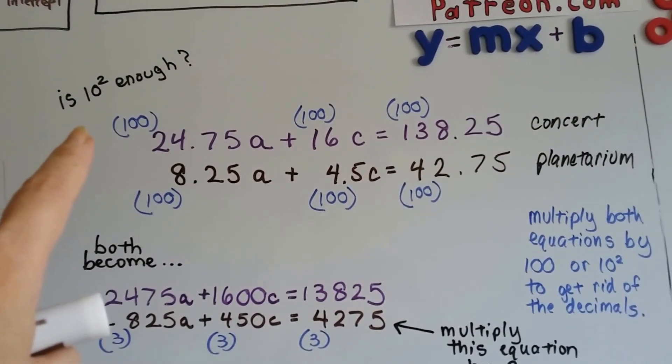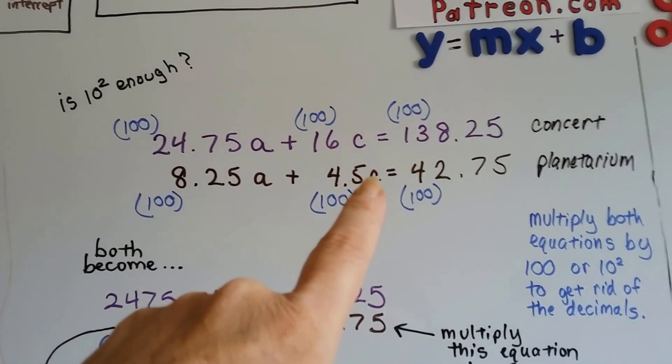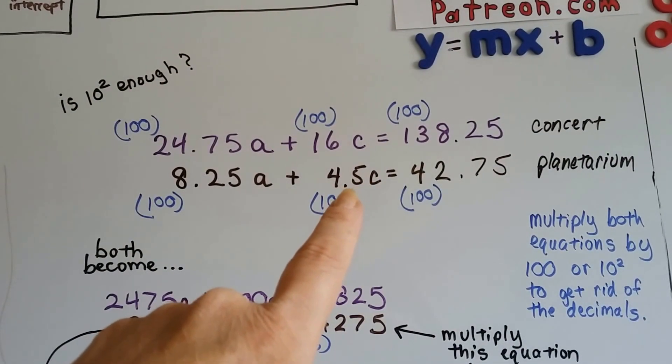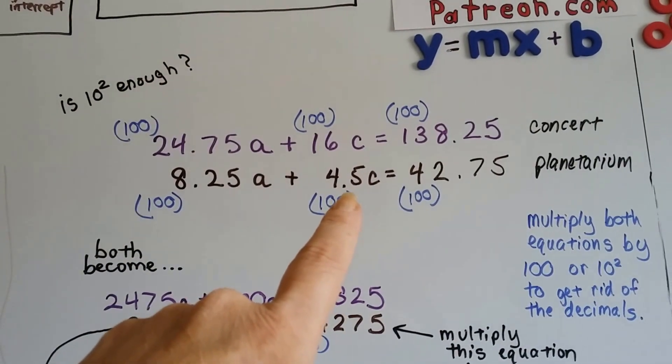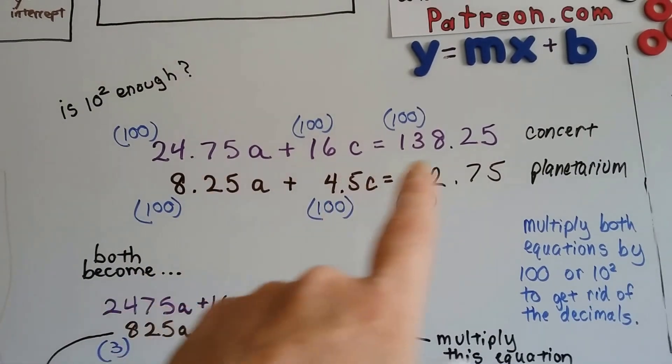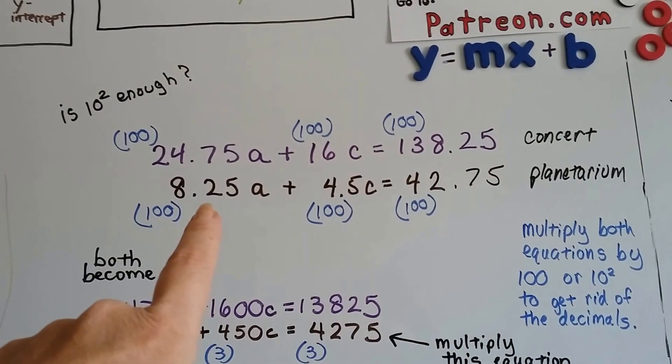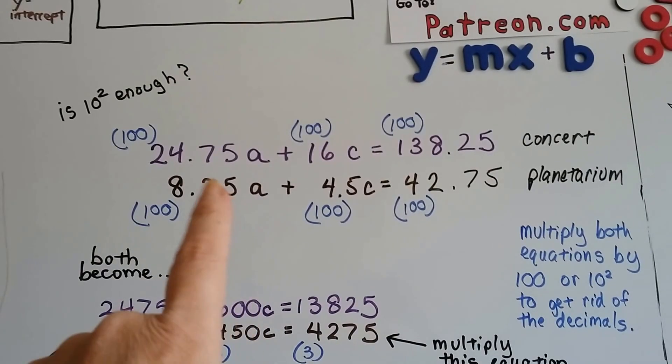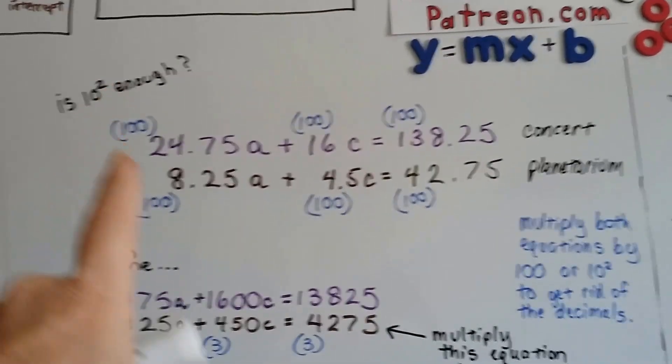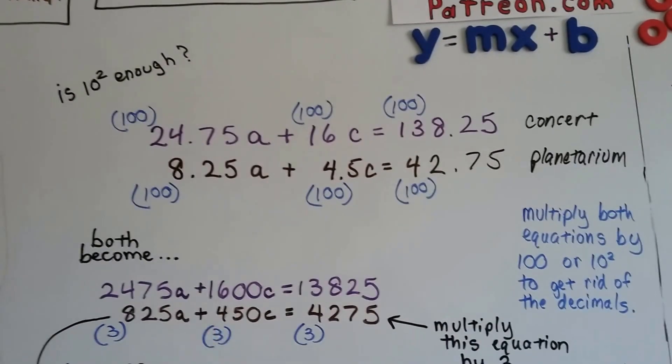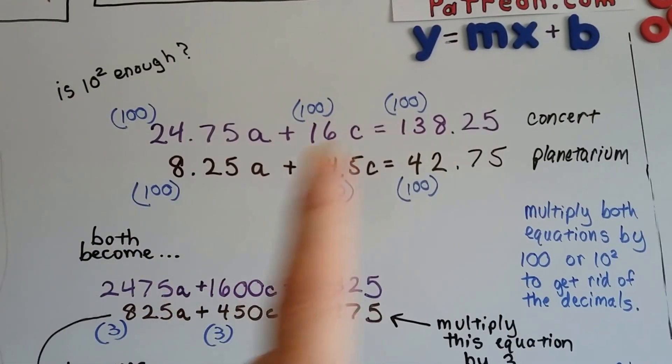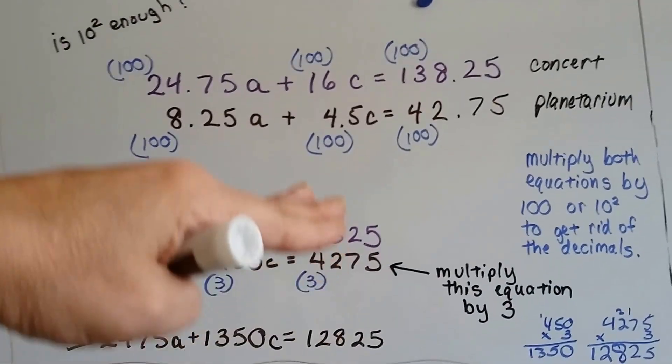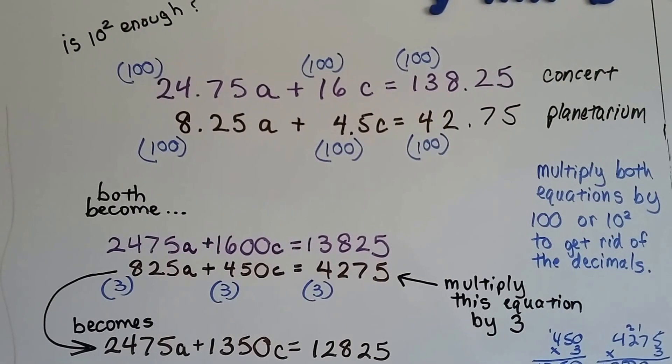Now, is 10 to the second power enough? This needs only to be multiplied by 10 to remove this decimal, but all the other ones have two decimal places. So we need to go with the greatest amount of decimal places. We're going to have to do 10 to the second power, or 100.